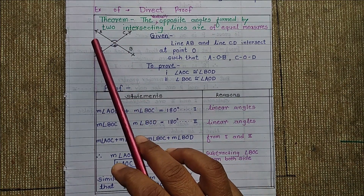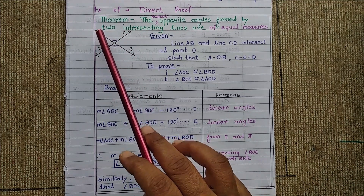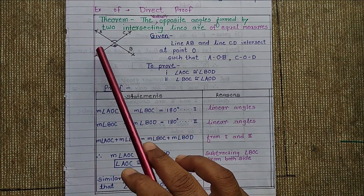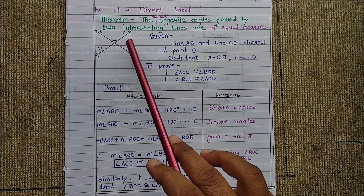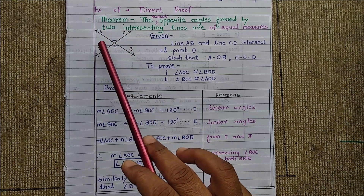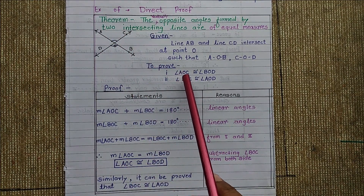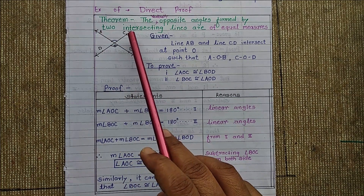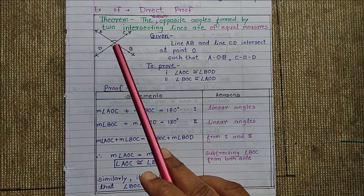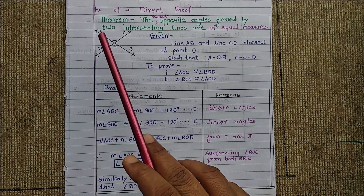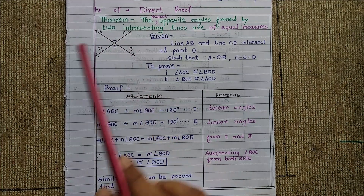Similarly, angle AOD and angle BOC are also vertically opposite angles to each other. So we have two pairs: angle AOC with angle BOD, and angle AOD with angle BOC.